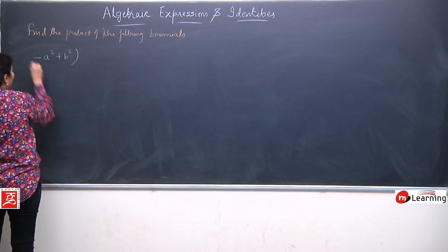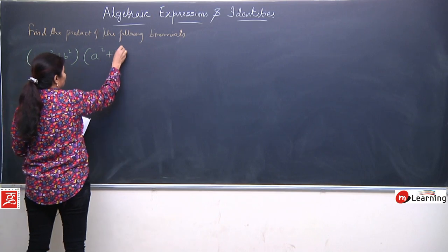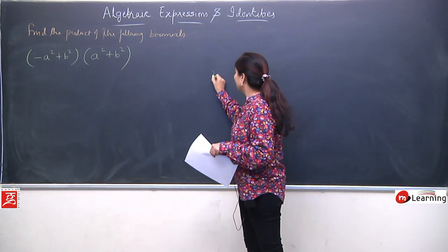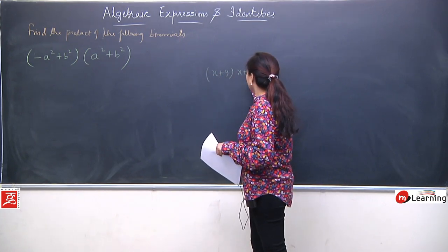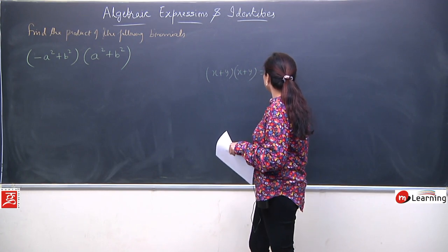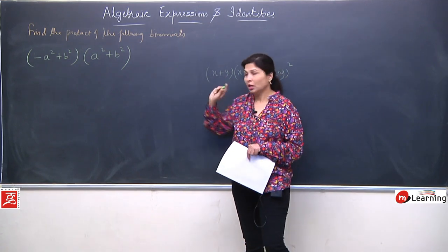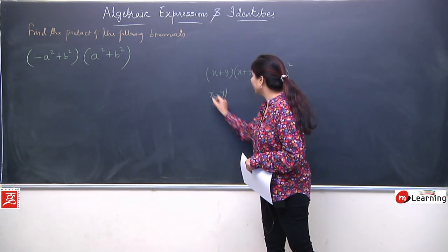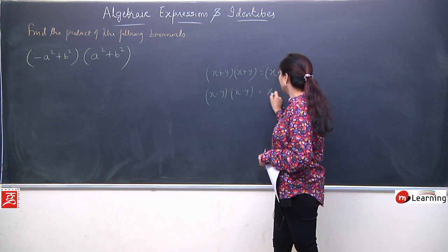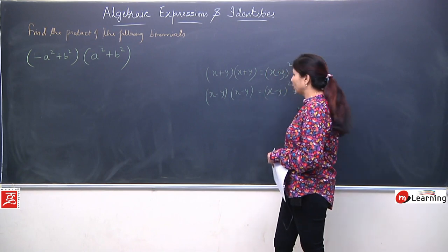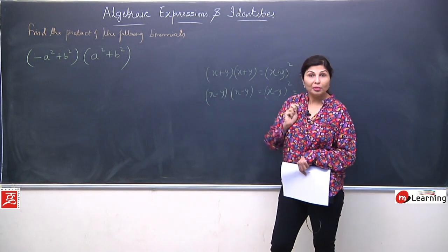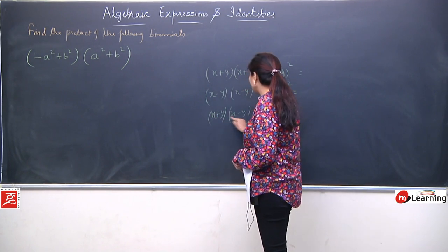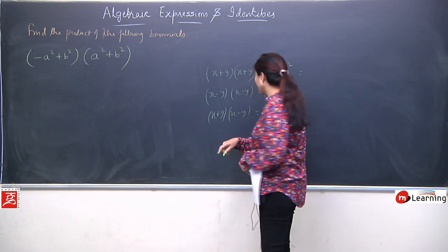First, we look at the factors — what kind of binomials we have. Like if we have x plus y and x plus y, we can easily write (x+y)². But both are not plus here. Then we saw the situation x minus y and x minus y, giving (x-y)². But both are not minus either. The third situation we covered: x plus y and x minus y — one plus, one minus — giving x² minus y².